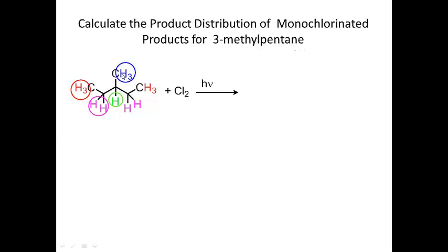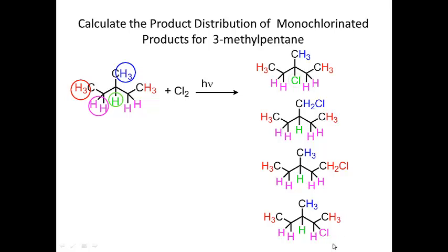Let's look at 3-methylpentane. There are four sites for potential abstraction: one site identical to another (same color), a secondary site identical to another, a tertiary site in the middle, and a set of methyl hydrogens different from the rest. When we react this with chlorine in the presence of light, we get four different products: one with chlorine at the tertiary site, two with chlorine at different primary sites, and one at the secondary site.